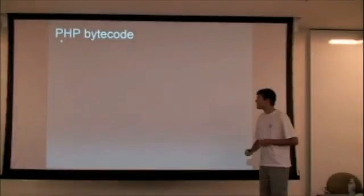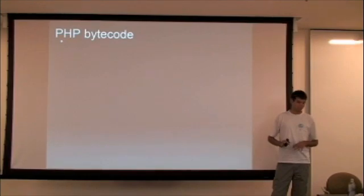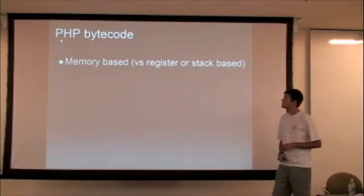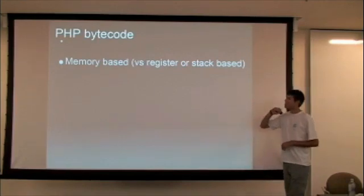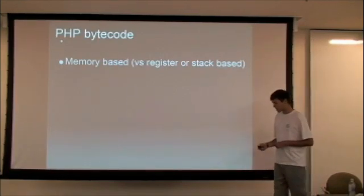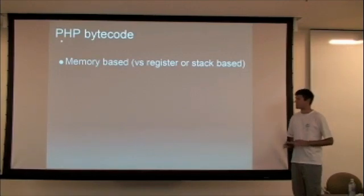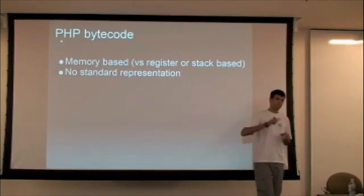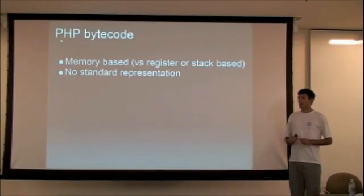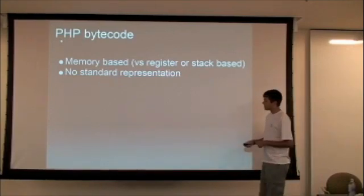So now let's see how PHP bytecode is engineered. It is really different from what you see in other mainstream VMs. So it is memory-based as opposed to register-based like LLVM or Parrot, or stack-based like JVM or .NET. So the PHP bytecode has references to specific memory locations, which is a bit weird, but that's what it looks like. Also, it has no standard representation. So there is no standard textual representation. And there is also no standard way to serialize the bytecode to disk. So although there are some extensions that do that, there is no standard way to do it.